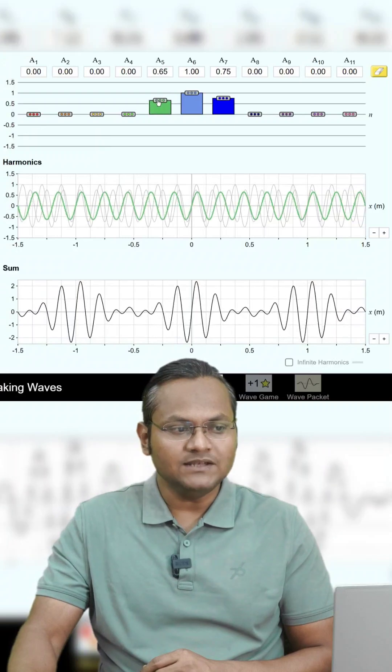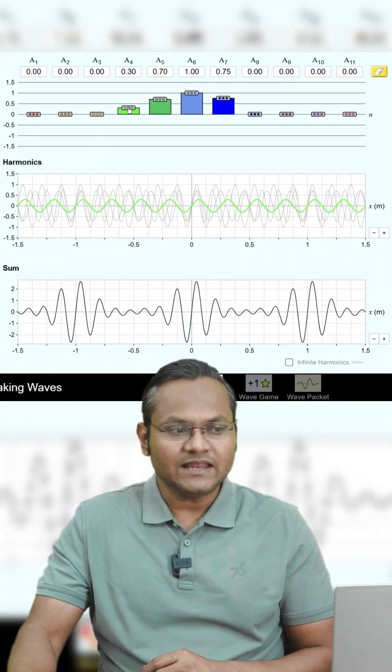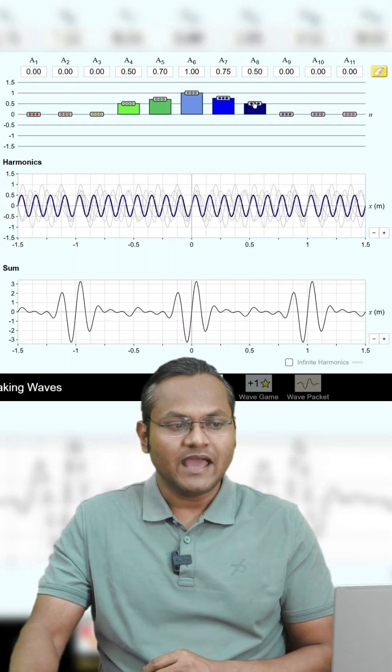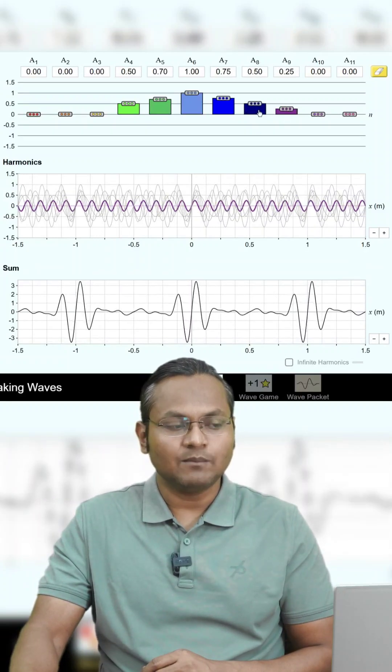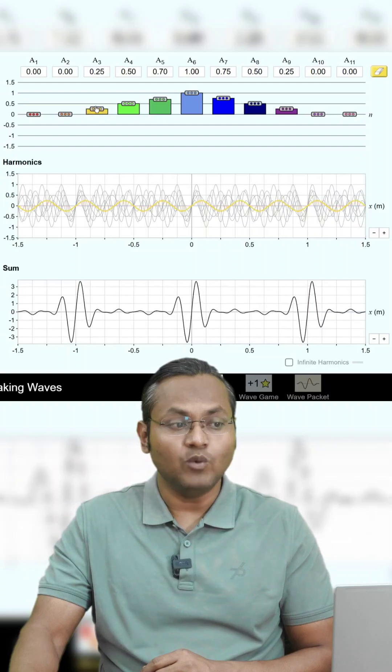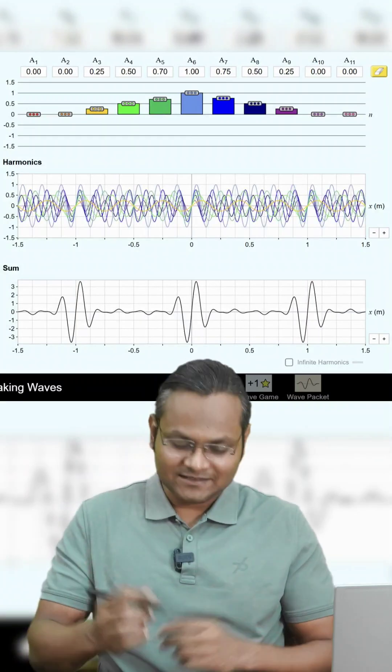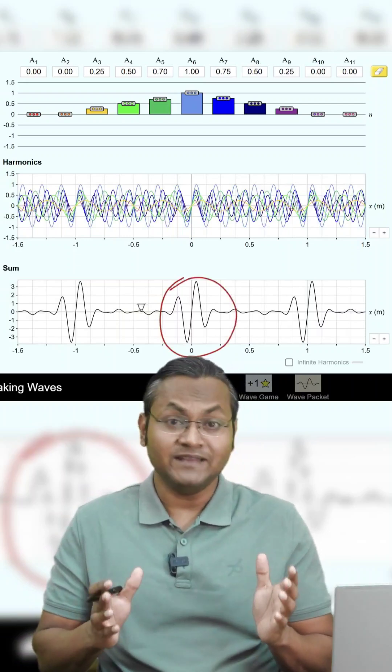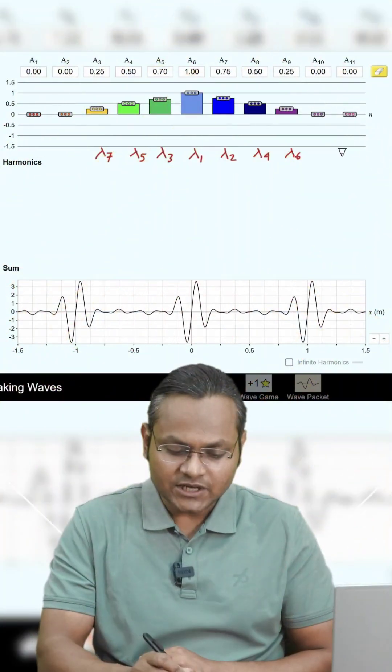I can take this process forward and add multiple waves having slightly different wavelength and slightly different amplitude in this manner, and then we can end up creating something that resembles what is known as the wave packet. Here you can see that we have achieved a localized wave packet by the addition of sine waves.